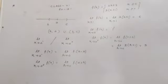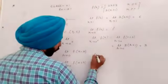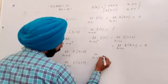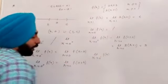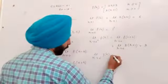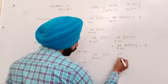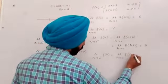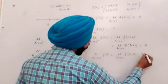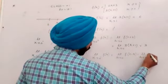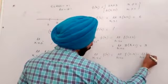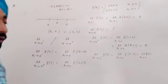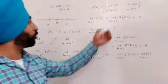Now we will find left limit. X approaches to 0 negative f(x). Then we can write limit h approaches to 0, f of (0 minus h). That is limit h approaches to 0, f of minus h. Now we are talking about 0 from below.